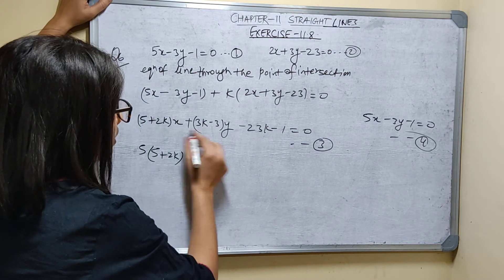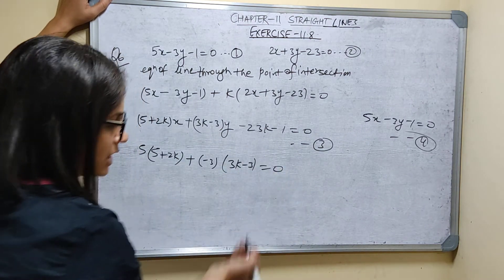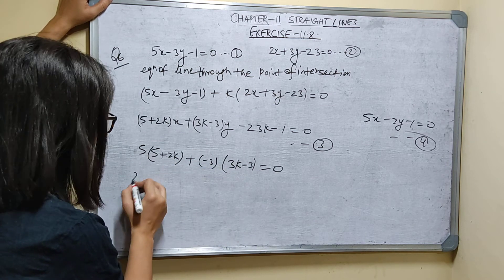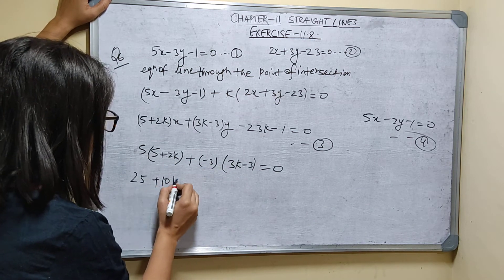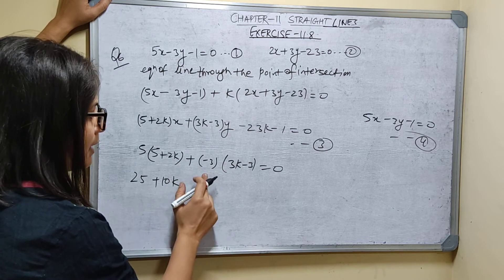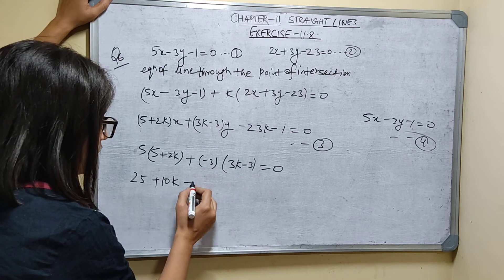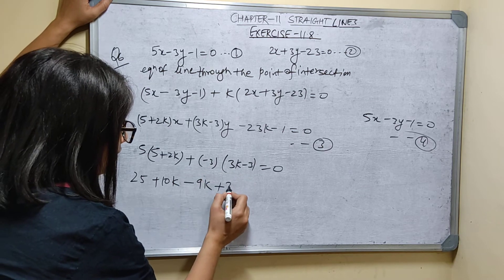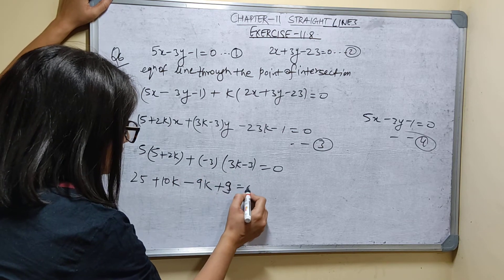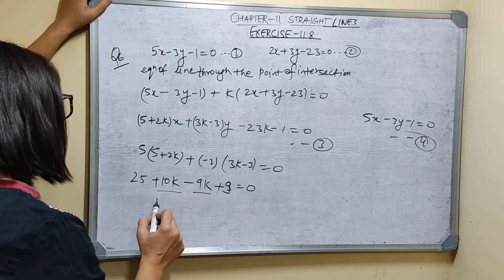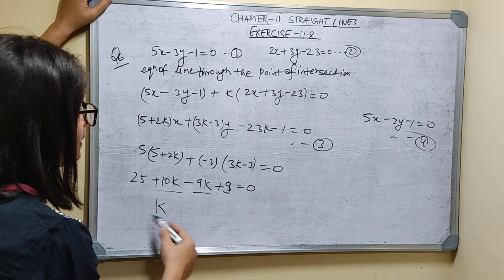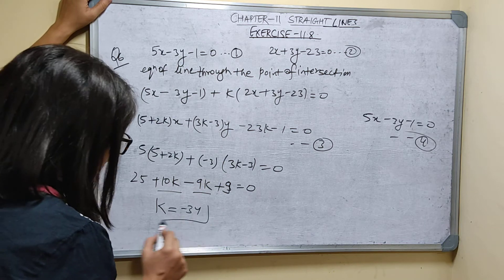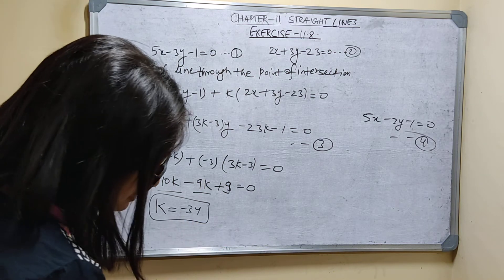Applying the perpendicularity condition: (5 plus 2K) times 5 plus (3K minus 3) times (minus 3) equals 0. This gives: 25 plus 10K plus (minus 9K plus 9) equals 0. So 25 plus 10K minus 9K plus 9 equals 0, giving K plus 34 equals 0, so K equals minus 34.